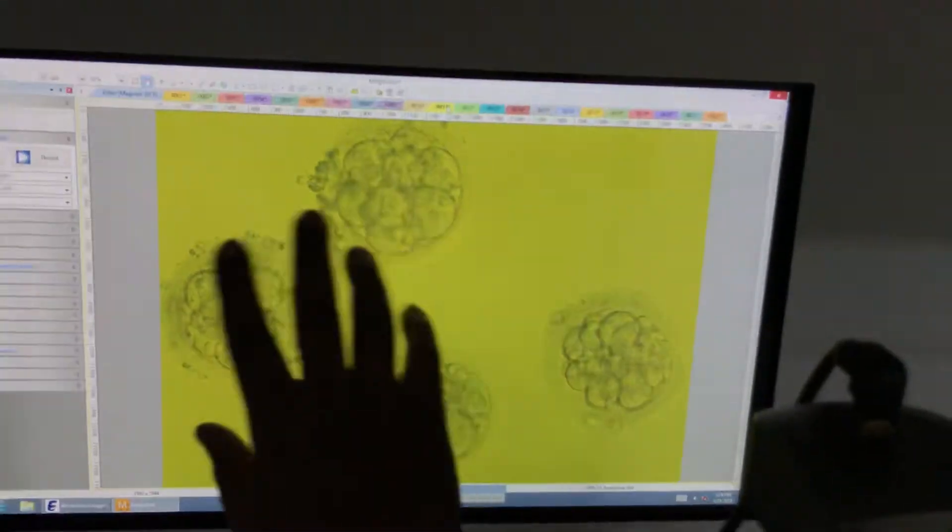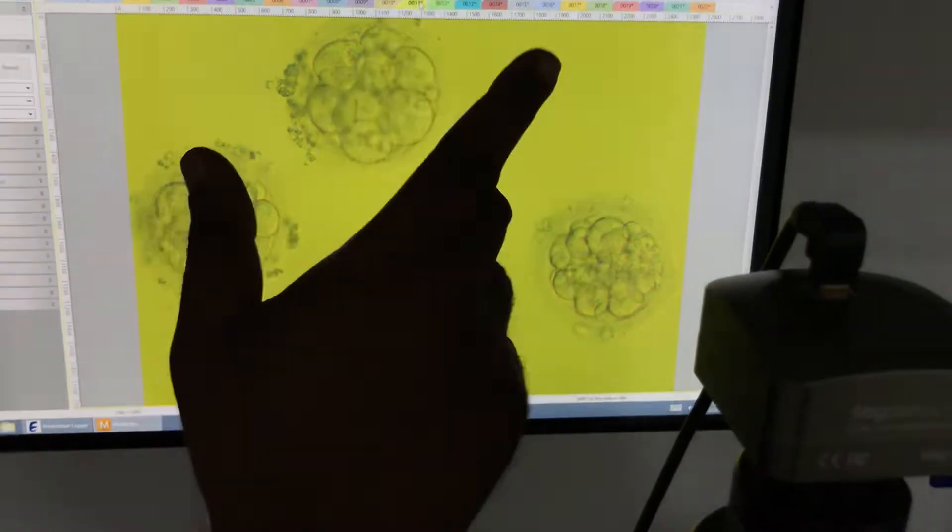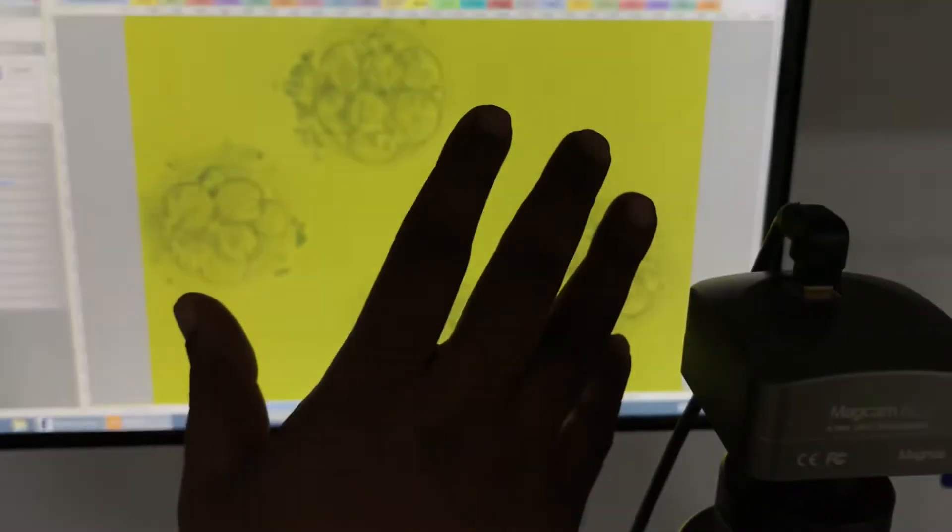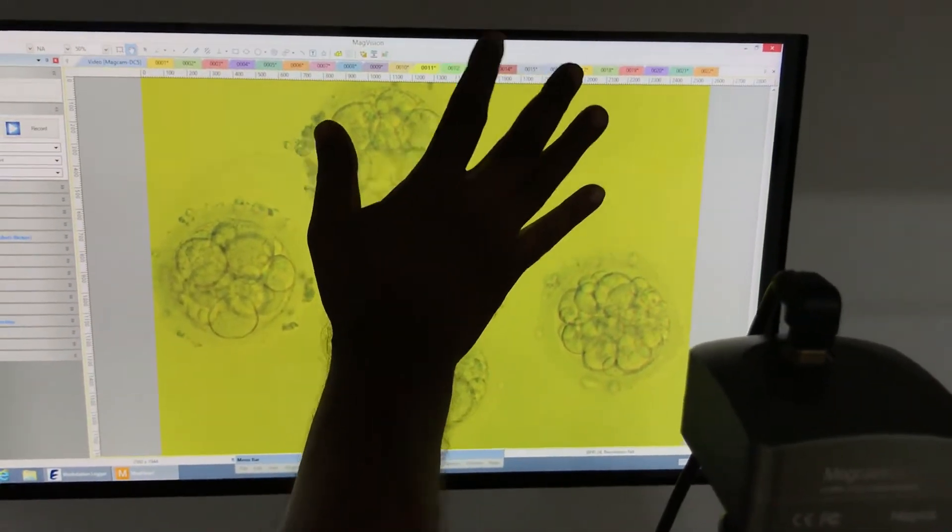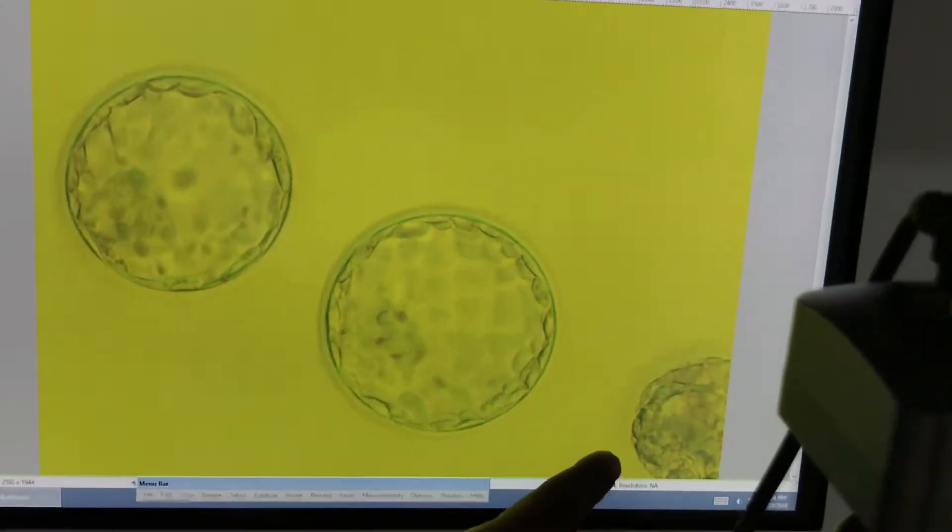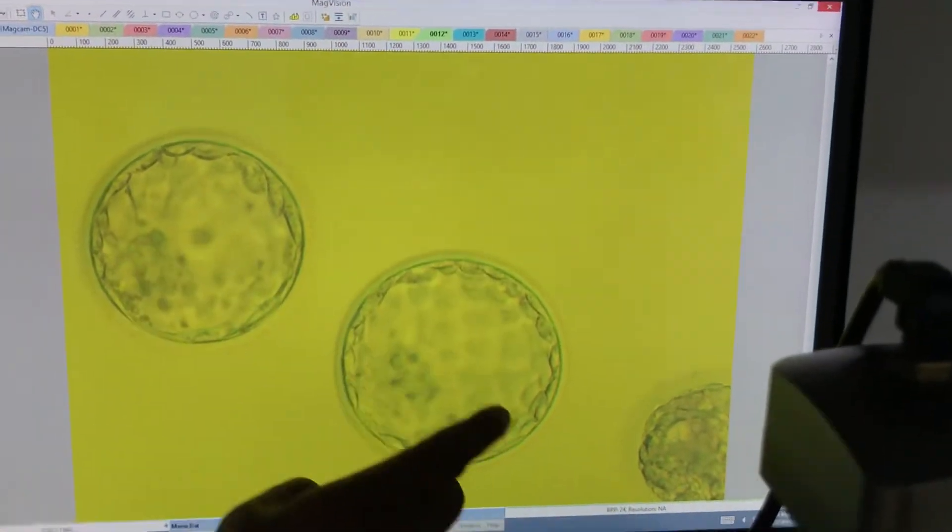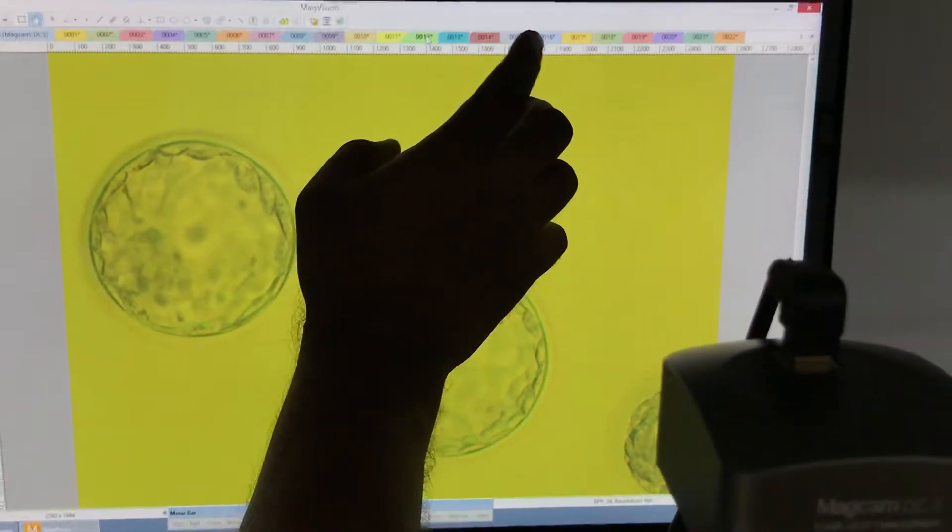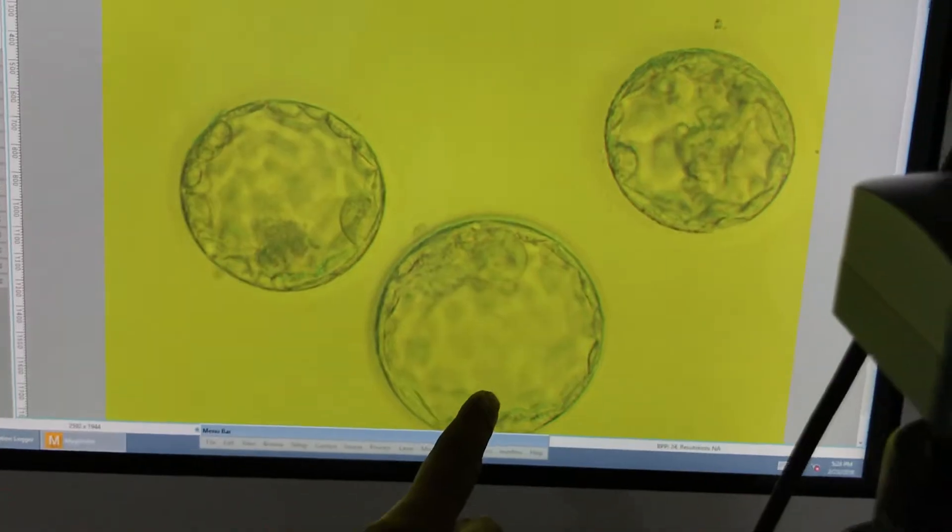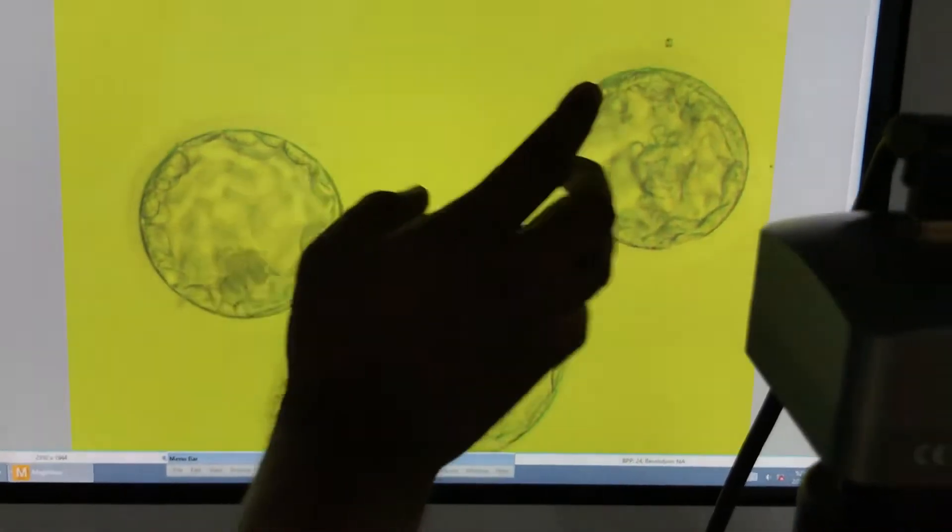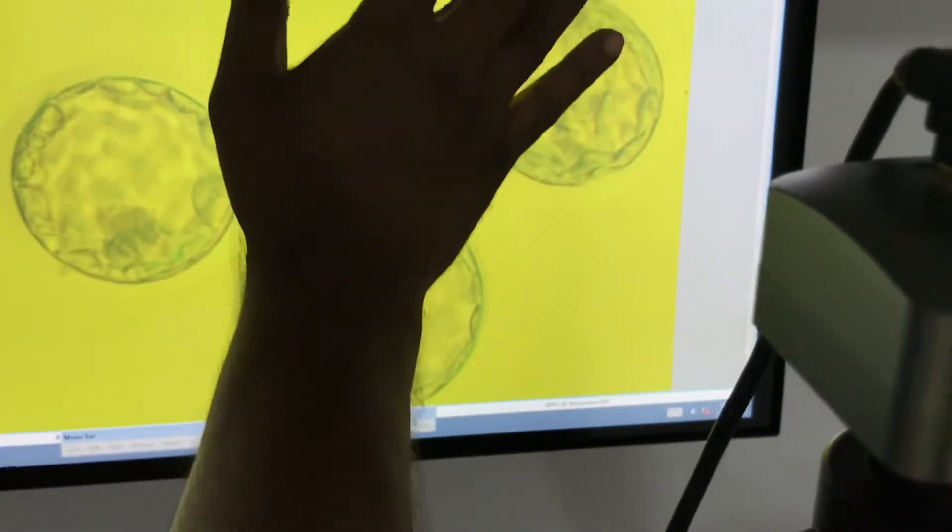We transferred almost ten embryos - one remaining is waiting for the doctor. Now post-thaw: patient number one has 4AA, 5AA, early blast. Patient 13 has 5A, 8-cell, 4AA. This AB looks like AB.